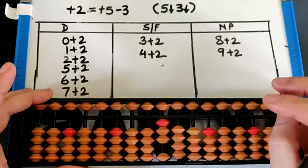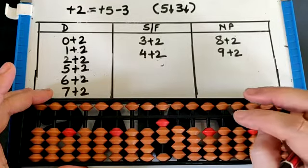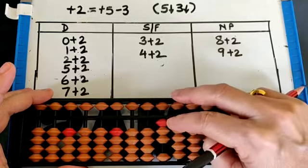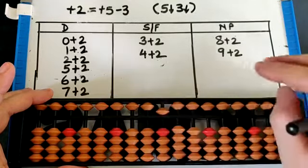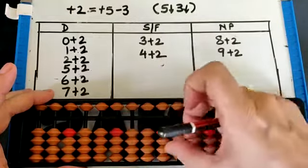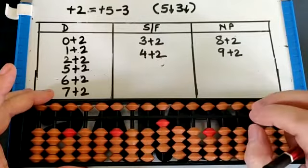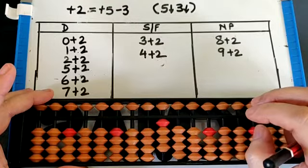3 plus 2 - two beads are not available, so we'll take the help of small friend. So it will be 5 down, 3 down. That is 5. Now 4 plus 2, again we can take the help of small friend - 5 down, 3 down - that is 6.